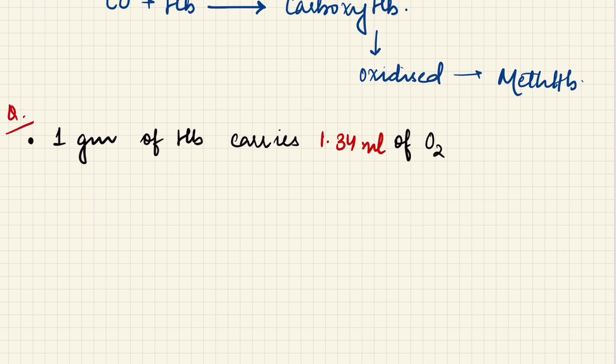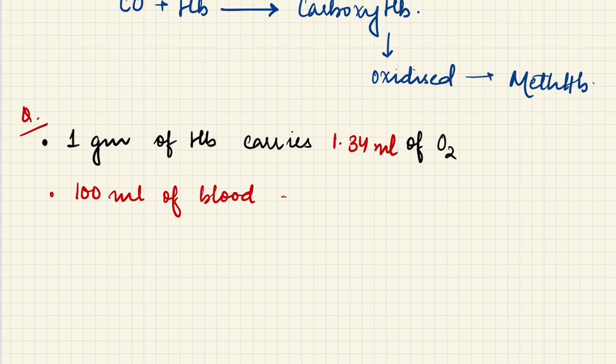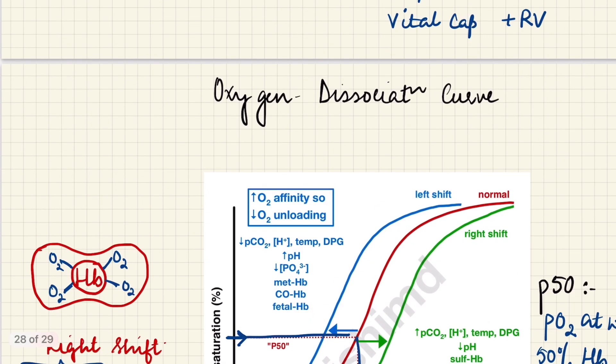100 ml of blood carries how much oxygen? In 100 ml of blood, the hemoglobin is approximately 15 grams. So 100 ml of blood is going to carry 1.34 times 15, that is approximately 20 ml. So 100 ml of blood carries 20 ml of oxygen. These two questions are very important.